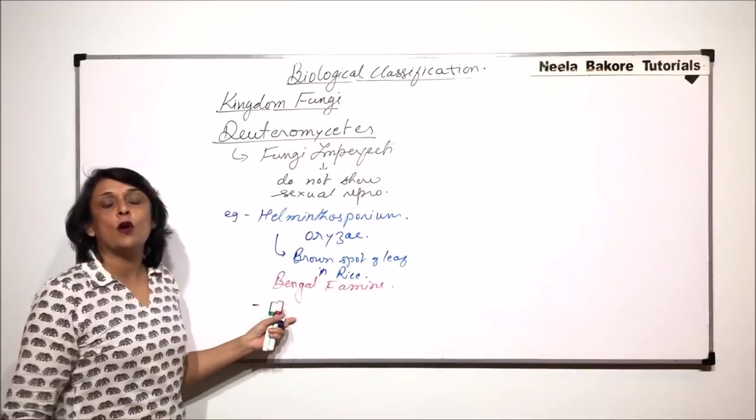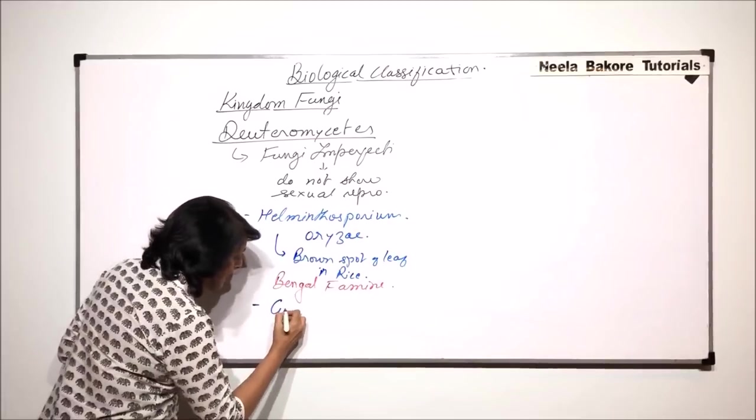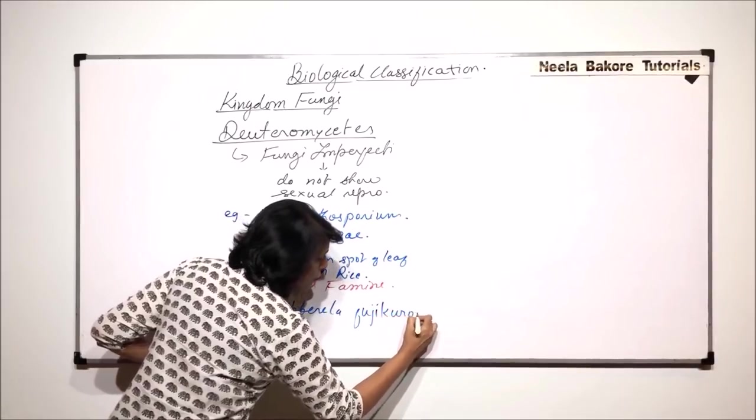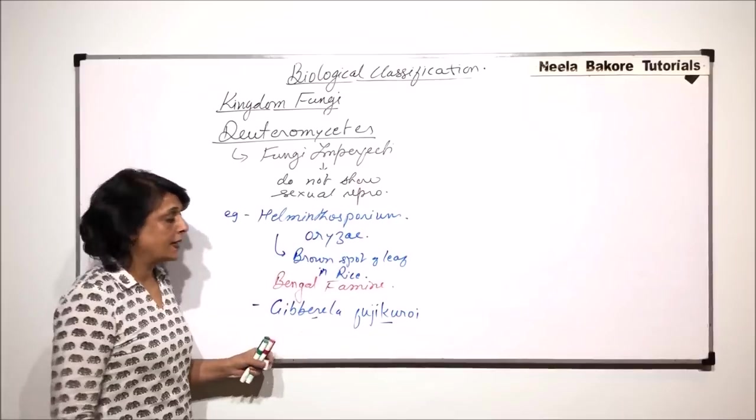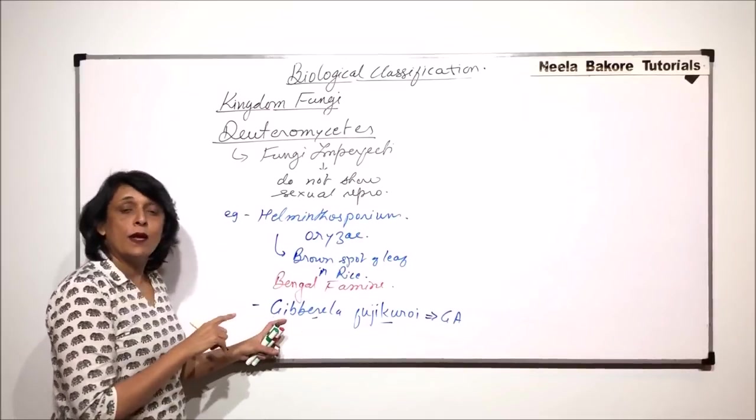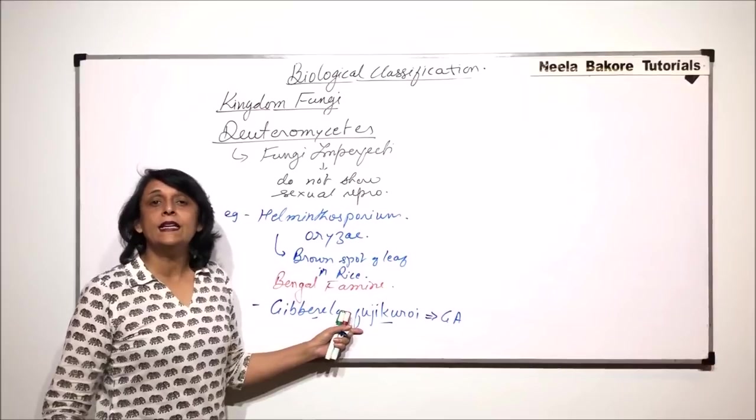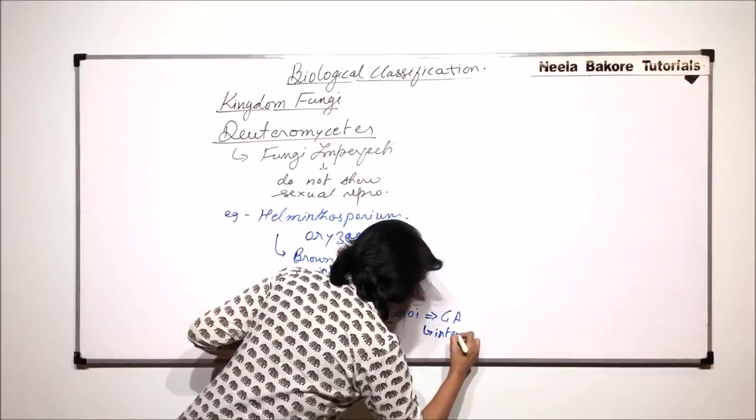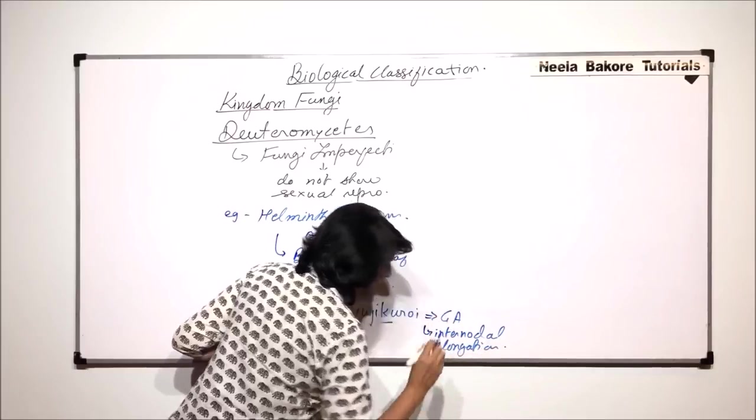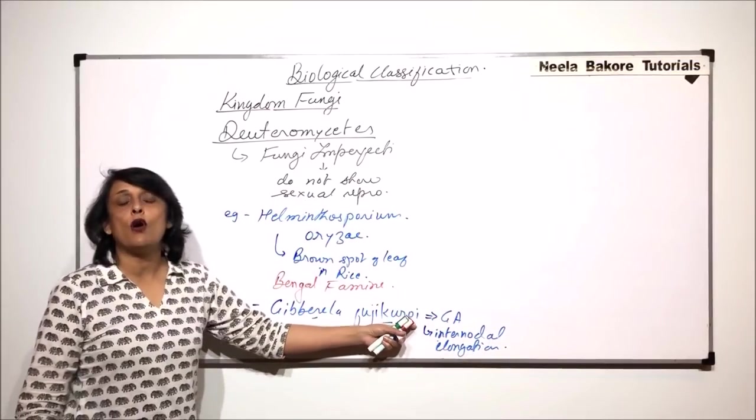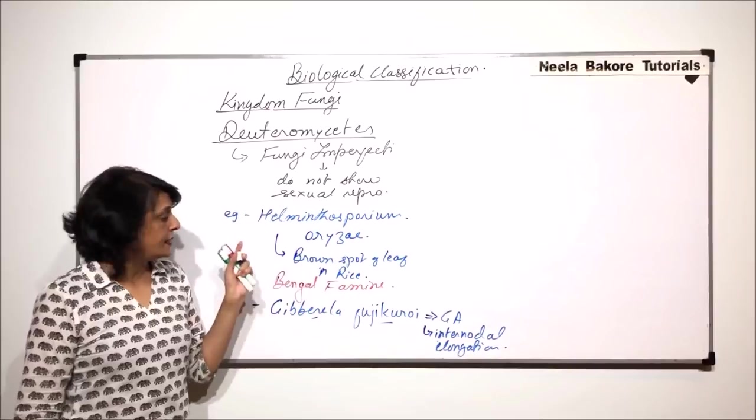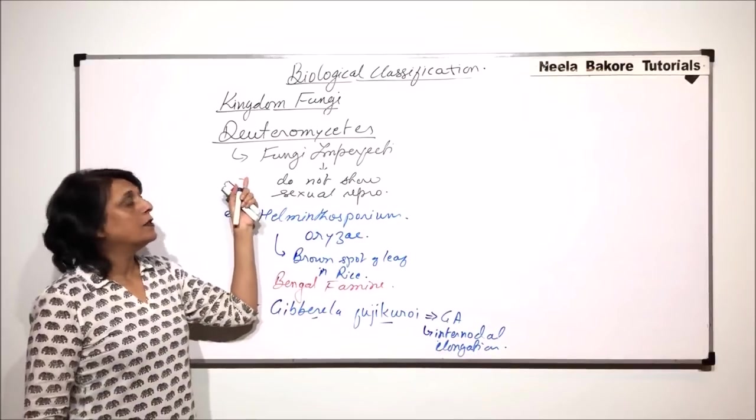There are two more examples which we talk of when we talk of phytohormones, and that is Gibberella fujikuroi. This fungus releases gibberellic acid or gibberellin, which is responsible for bolting, that is internodal elongation. This phytohormone is produced by Gibberella, which is also in Deuteromycetes.